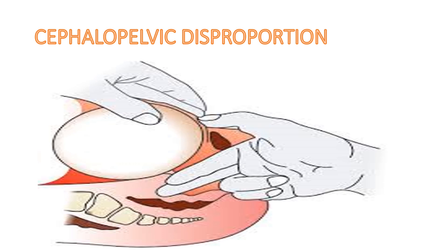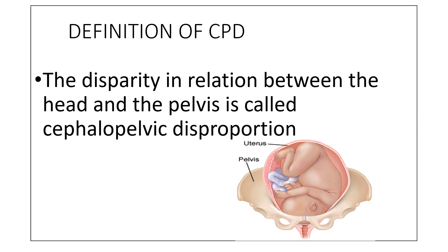Hi friends, today in this class let us discuss about cephalopelvic disproportion. The definition of CPD is a disparity in relation between the head and the pelvis. If there is a disproportion between the fetal head and the maternal pelvis, that is known as cephalopelvic disproportion. Sometimes the head may be large, or the pelvis may be small, or the baby may be of normal size with a small pelvis — in these cases, CPD can occur.